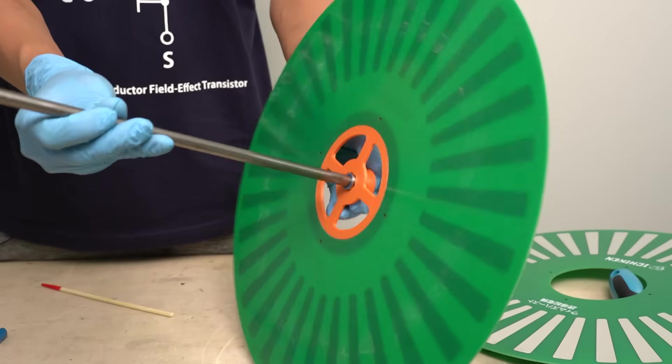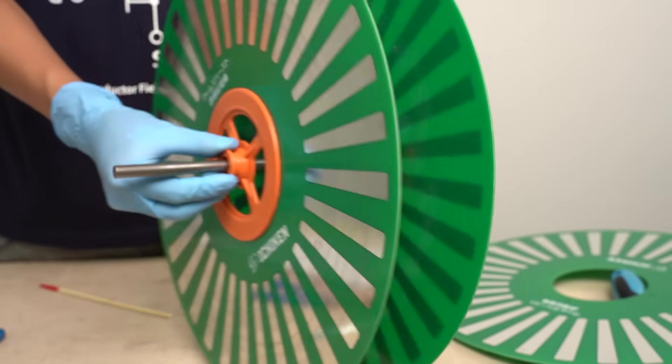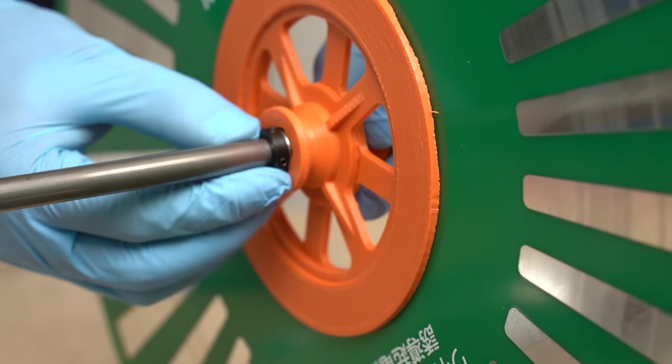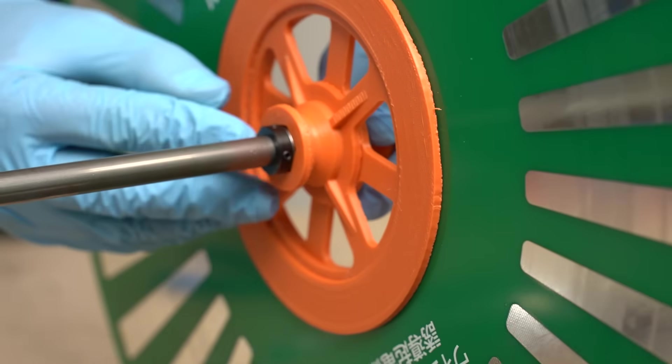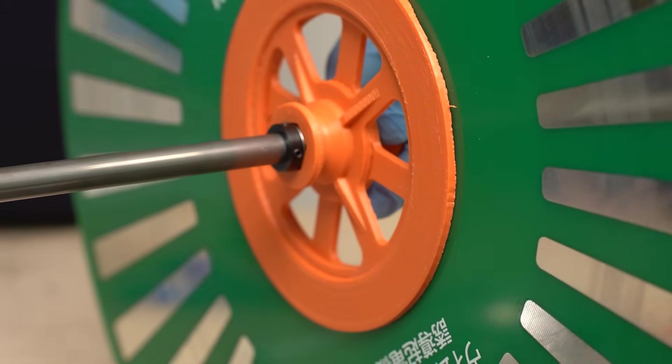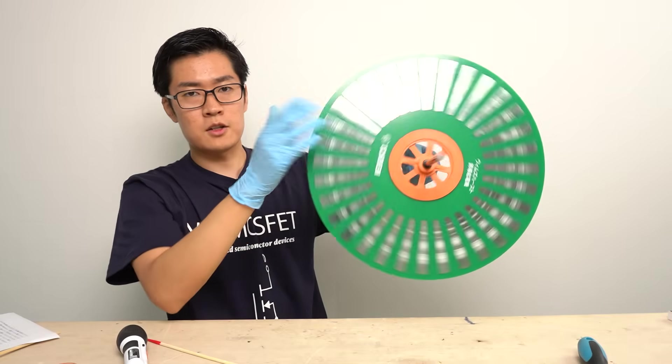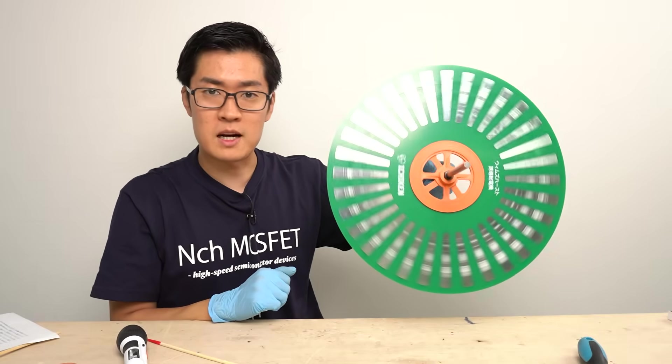I will put the shaft through the hubs. With just this the disks can easily move and the bearings may come off. Therefore I will attach collars to secure the disks. The disk part is complete. It rotates smoothly like this. The smoothness of rotation has improved significantly compared to the last time.